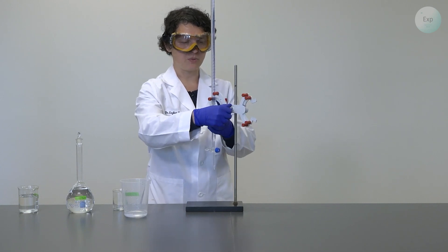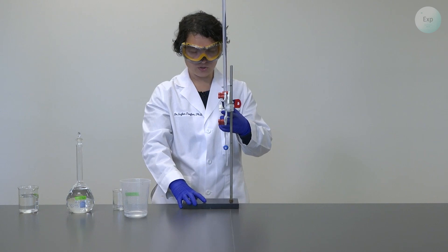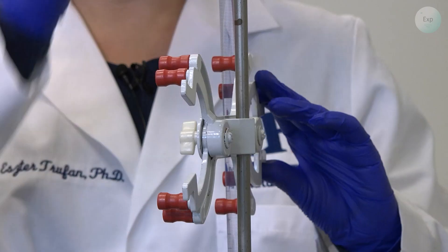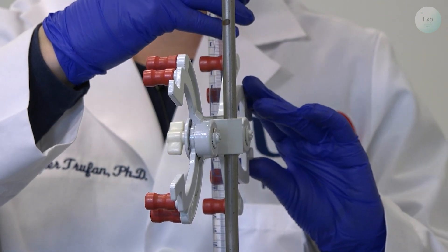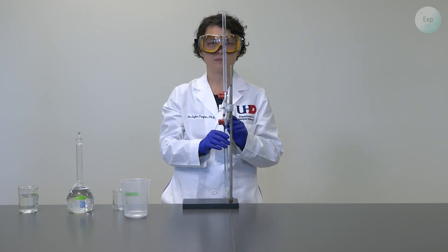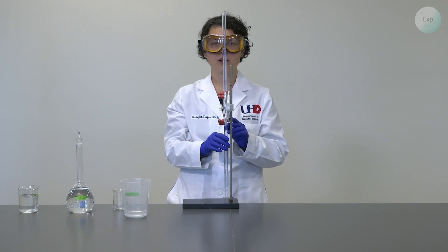So just like with any other measurement, we want to make sure that we bring the meniscus of our solution in the burette to our eye level. And that may require some adjusting of the position of the burette. So we lower it down, we make sure that the numbers are facing us, and that the burette is standing straight. And when we look at it, we will record the volume as is included.